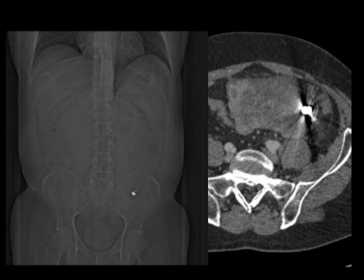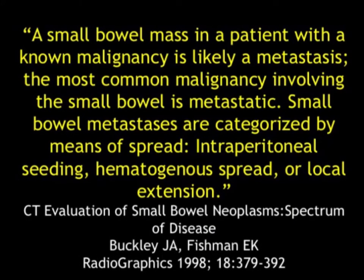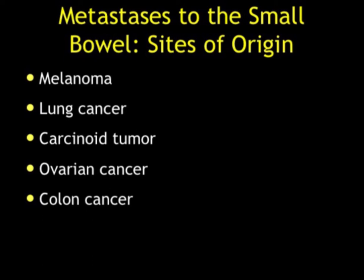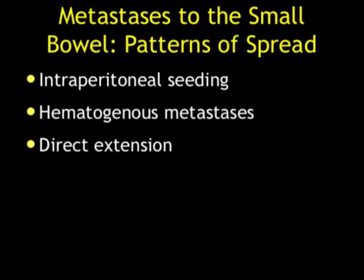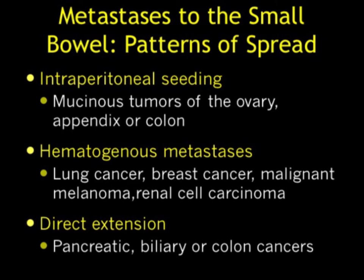Let me speak about metastasis. When looking up metastatic disease to the small bowel, the most recent article of any value was one we wrote 16 years ago. A small bowel mass in a patient with a known malignancy is likely a metastasis — the most common malignancies involving the small bowel are in fact metastatic. Tumors can spread by intraperitoneal seeding, hematogenous spread, or local extension. The most common tumors are melanoma at the top of the list, then lung cancer, carcinoid, ovary, and colon. For intraperitoneal seeding, ovarian cancer is the classic example with implants on liver, spleen, and bowel. Hematogenous mets: think breast, lung, melanoma, and renal. For direct extension, pancreatic or biliary tumors are most common — pancreatic cancer involving small bowel is probably the number one cause.